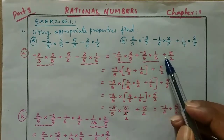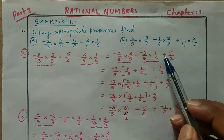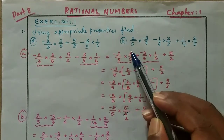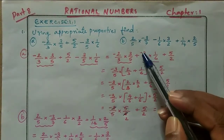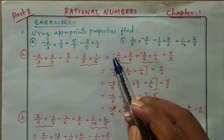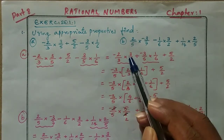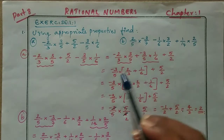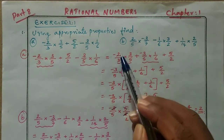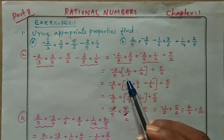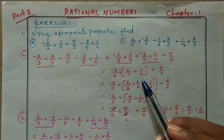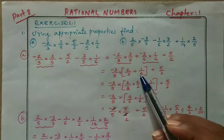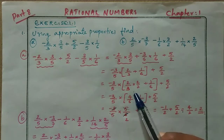So I am taking these two rational numbers together: minus 2 by 3 into 3 by 5 plus minus 3 by 5 into 1 by 6, then plus 5 by 2. Here we have 3 by 5 and minus 3 by 5. Since we already have a minus sign, we take minus 3 by 5 outside, leaving the bracket as: 2 by 3 plus 1 by 6, plus 5 by 2.